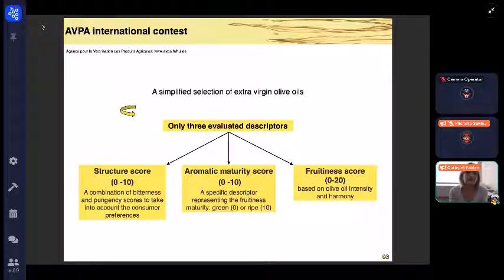An aromatic maturity score is a specific descriptor representing the fruitiness maturity—a score near zero when olive oil's fruitiness is green, or a score close to ten when olive oil presents a ripe fruitiness.